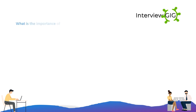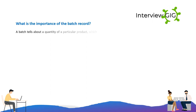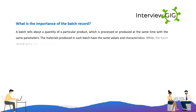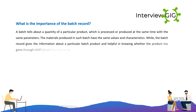What is the importance of the batch record? A batch tells about a quantity of a particular product which is processed or produced at the same time with the same parameters. The materials produced in such a batch have the same values and characteristics. The batch record gives information about a particular batch product and is helpful in knowing whether the product has gone through GMP, good manufacturing process.